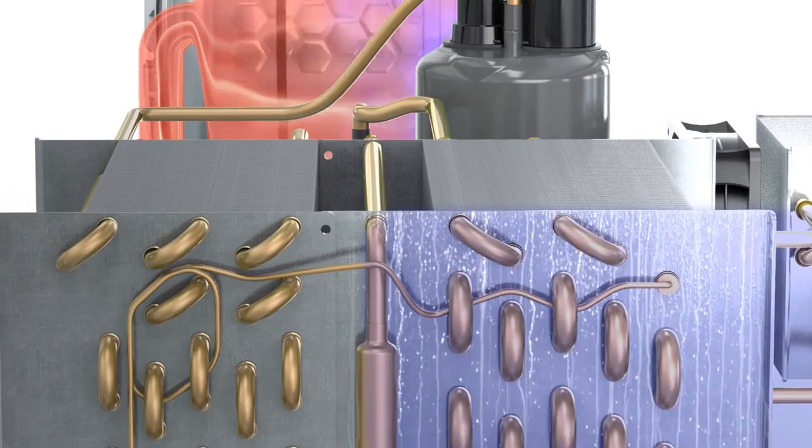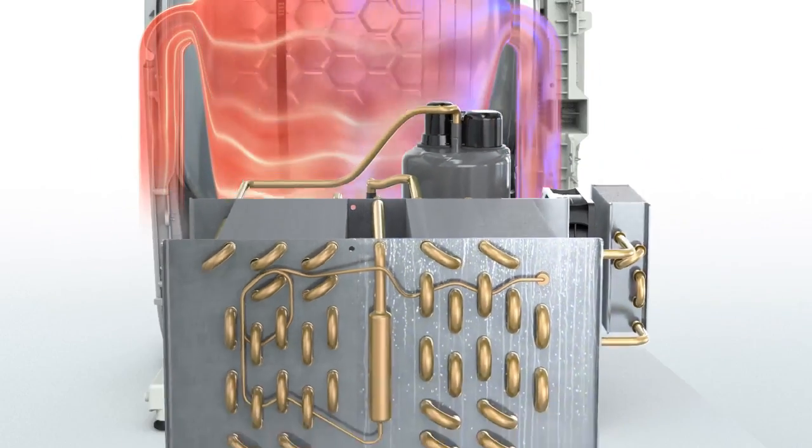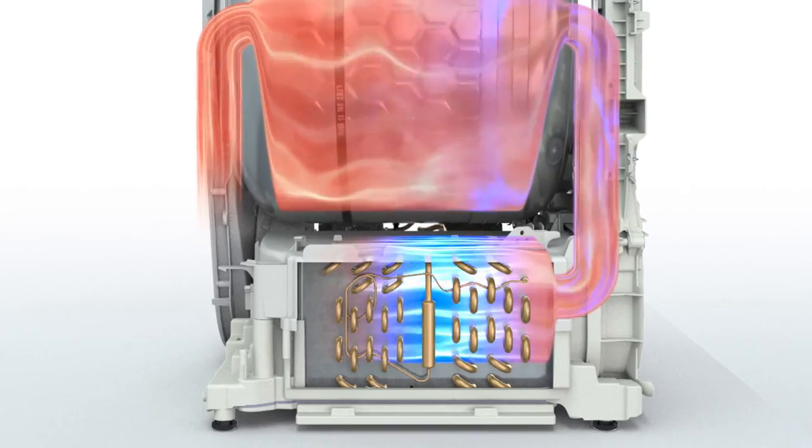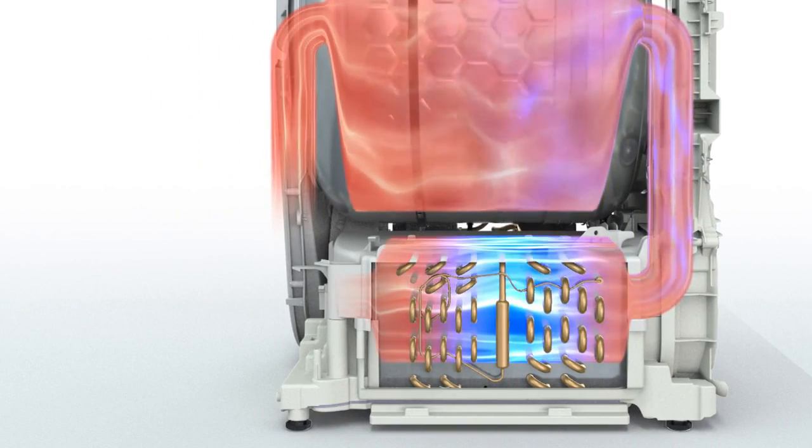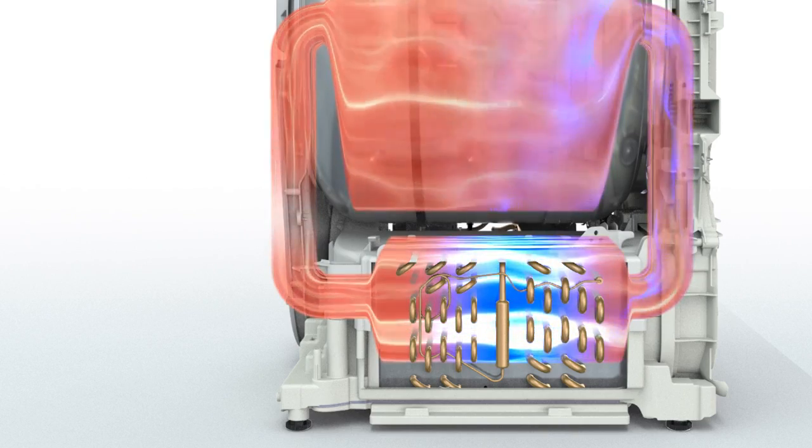There, the air is cooled down and sheds its moisture load. The cooler and dryer air next passes through the second heat exchanger. Here, the air is reheated before re-entering the drum.